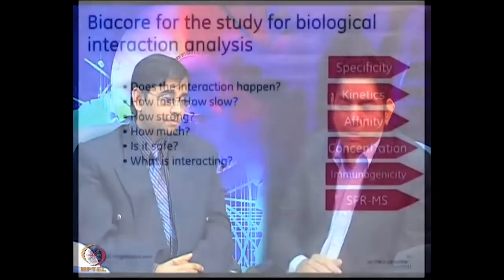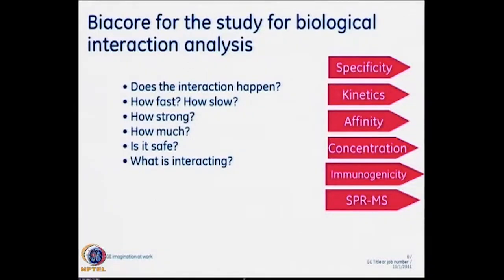On my PPT, here is a very simple analysis of different things that can be done with Biacore. These are the six applications. When studying an interaction A plus B gives AB, the questions you ask are: first, does the interaction happen or not — is the molecule AB formed? Second, how fast is the interaction or how slow is the dissociation? Third, how strong is the interaction — what is the affinity? Fourth, how much of the analyte is there — what is the concentration of the analyte?